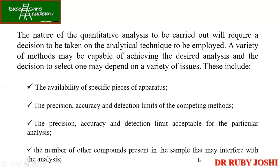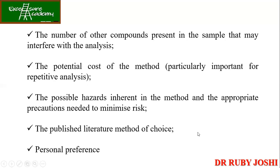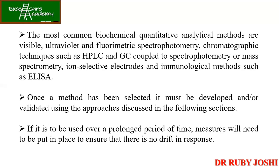Other considerations include the number of other compounds present in the sample that may interfere with the analysis, and the potential cost of the method. The most common biochemical quantitative methods include mass spectrometry, ion-selective electrodes, and ELISA. Once a method has been selected, it must be developed and validated using the appropriate approaches.